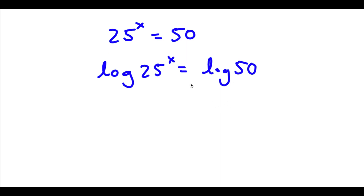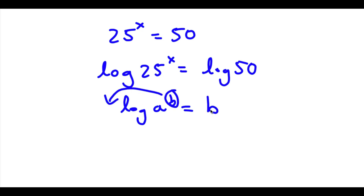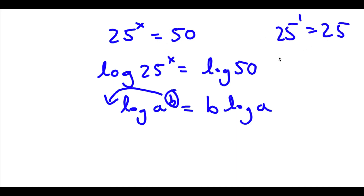Now an important property of logarithms is that if I have something in the form log a to the power of b, I can actually move this exponent b to the front of the logarithm, so this is going to equal b times log a. And why this property is so important is because we're trying to solve for the value of x, and we know that x is actually going to be a decimal because 25 to the power of 1 is 25 and 25 to the power of 2 is 625, so we know the value of x is going to be between 1 and 2.